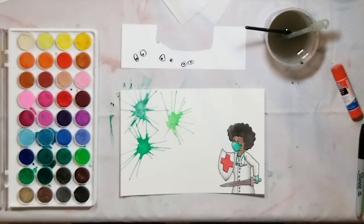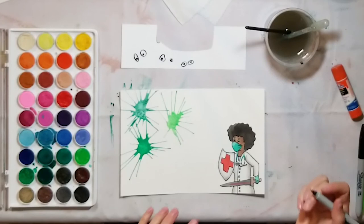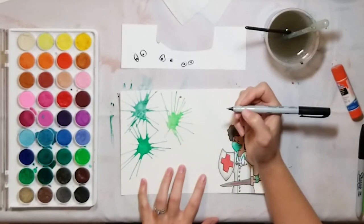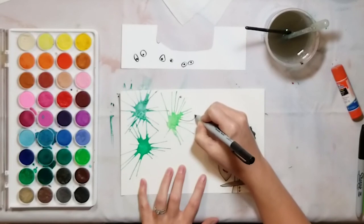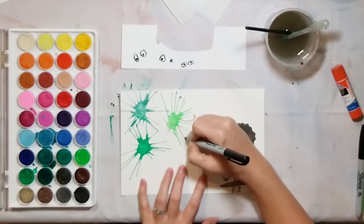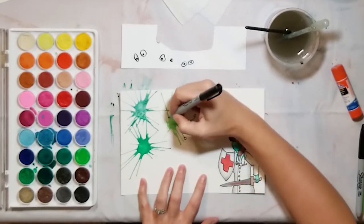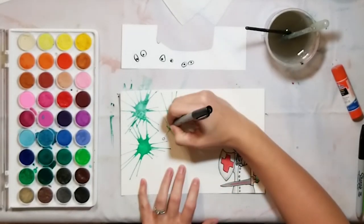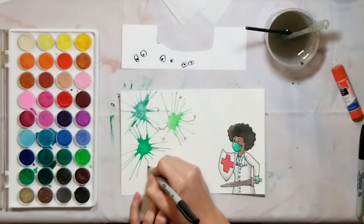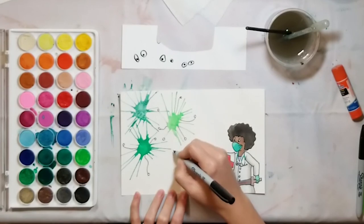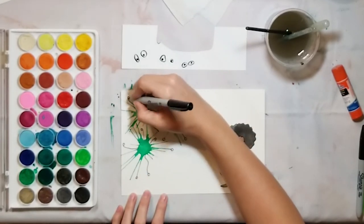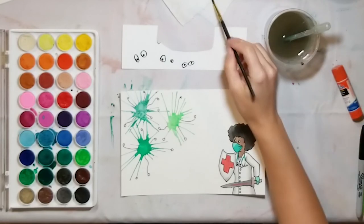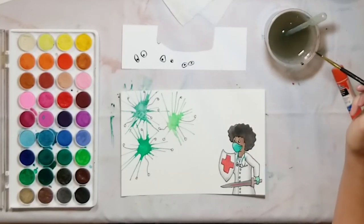Alright, next we're going to add some more details to our germs. I think I'm going to call these tentacles. So you're going to take a Sharpie or a marker or a pencil, whatever you have on hand, and you're going to add a few lines coming out from the center with a little circle on the end. And they can curl, they can come out straight. Just put a few all the way around. And you can even add a circle at the end of one of your lines of paint if you want. One or two. Let's see. And then we're going to color those in with warm colors. So yellow, orange, red.